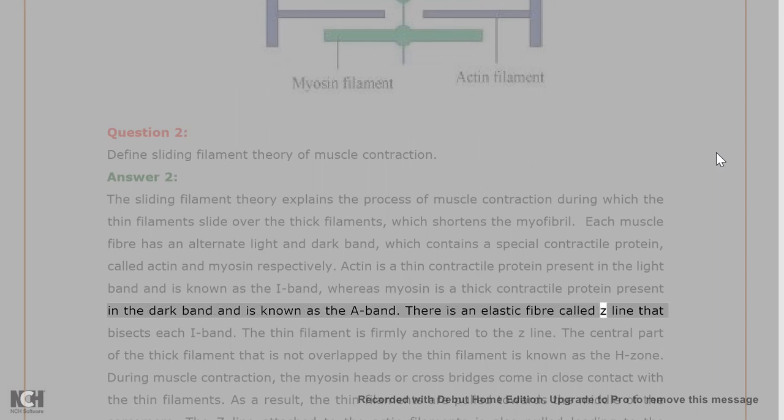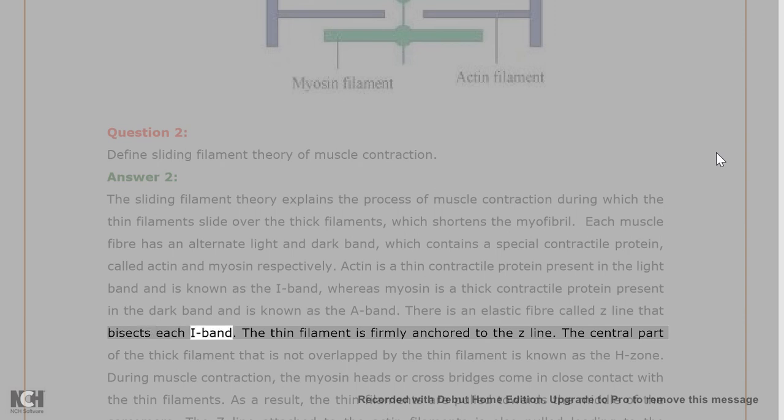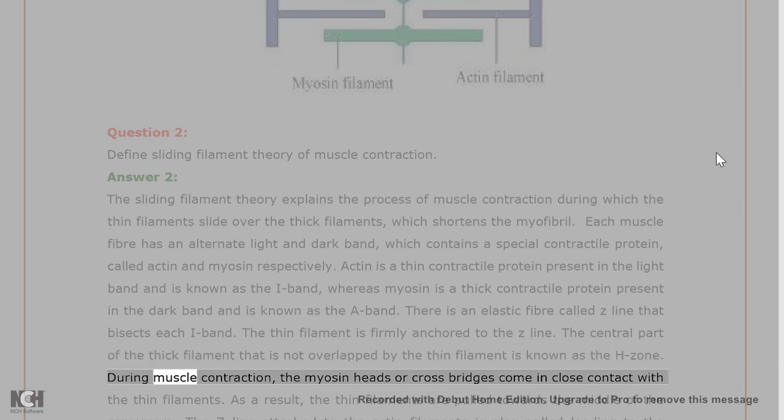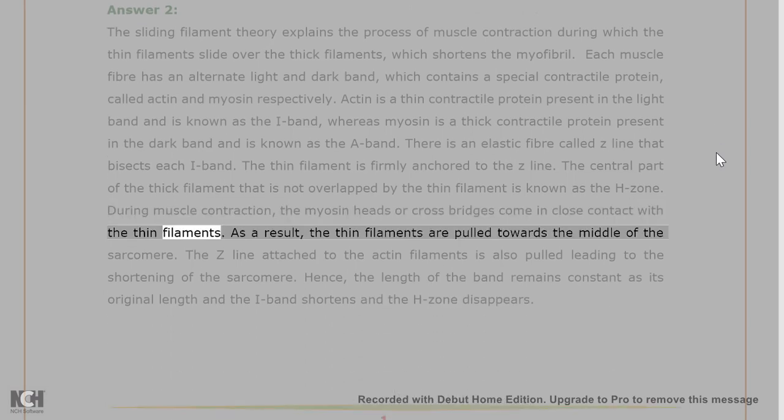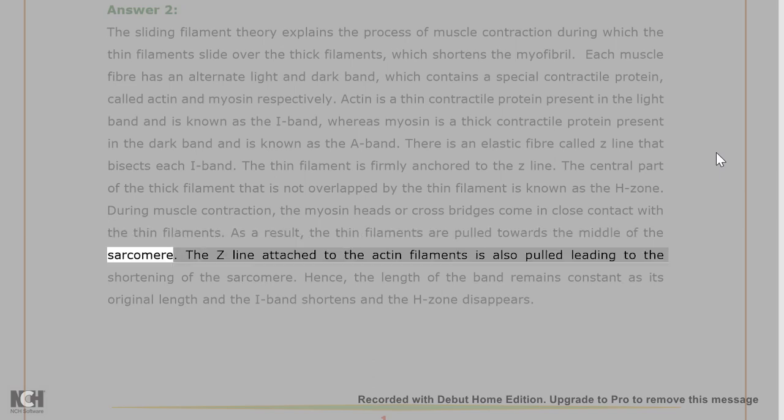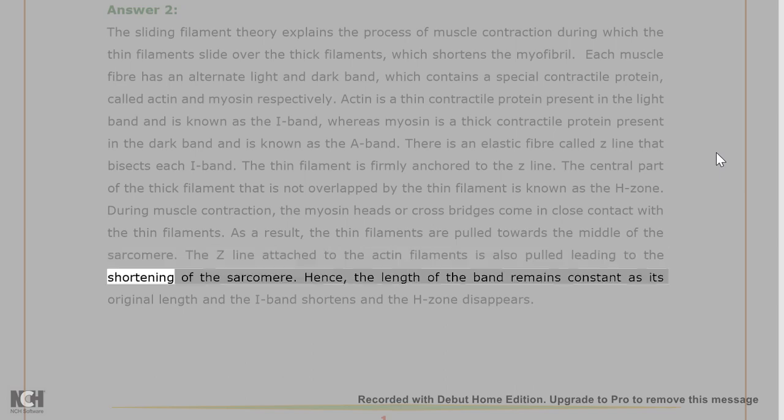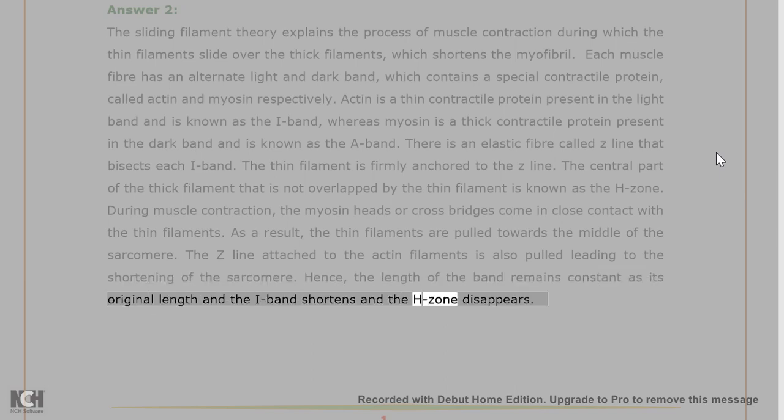There is an elastic fiber called Z-line that bisects each I-band. The thin filament is firmly anchored to the Z-line. The central part of the thick filament that is not overlapped by the thin filament is known as the H-zone. During muscle contraction, the myosin heads or cross bridges come in close contact with the thin filaments. As a result, the thin filaments are pulled towards the middle of the sarcomere. The Z-line attached to the actin filaments is also pulled leading to the shortening of the sarcomere. Hence, the length of the band remains constant as its original length and the I-band shortens and the H-zone disappears.